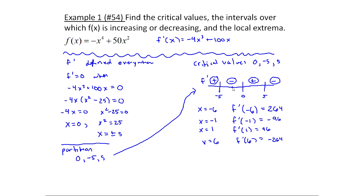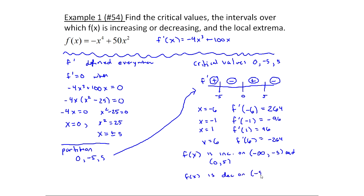Anywhere where f prime is positive is where the graph of f of x is increasing. So f of x is increasing on the intervals from minus infinity to minus five, and zero to five. Anywhere where f prime is negative is where f is decreasing: on minus five to zero and five to infinity. Sometimes instead of 'and,' people will put a union symbol — same idea.